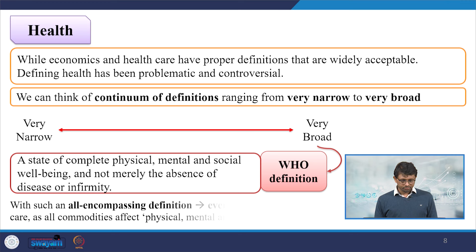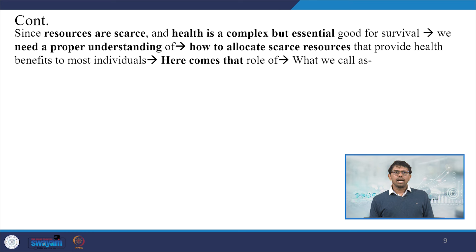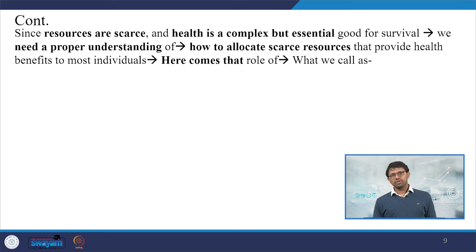In a broader context, we refer to the WHO World Health Organization definition: a state of complete physical, mental, and social well-being and not merely the absence of disease or infirmity. This covers a holistic picture and can fit into different setups. With such an all-encompassing definition, everything becomes healthcare as all commodities affect physical, mental, and social well-being. Since resources are scarce and health is complex but essential for survival, proper understanding of how to allocate scarce resources for health benefits becomes critical — and that is where health economics comes in.